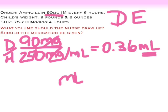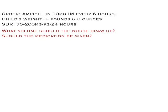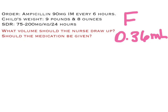Looks like I'm almost done. Now I have to do my fit. The volume I was supposed to give was 0.36 milliliters. Does that seem like a reasonable volume to give to a nine and a half pound kiddo? Yeah, that seems reasonable. What's the other part of that fit? Well, is the kid allergic to it? We don't know, but we don't think so — it doesn't tell us that. What about — is the dose itself safe? Let's find out. The safe dose range is 75 to 200 milligrams per kilo in 24 hours.